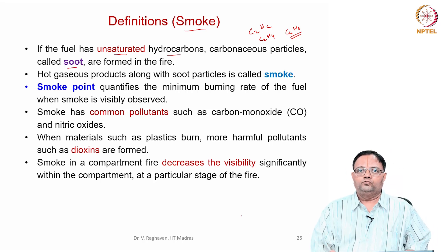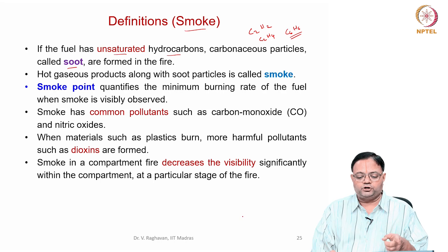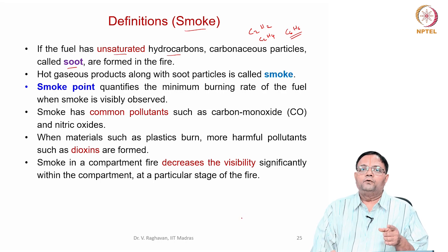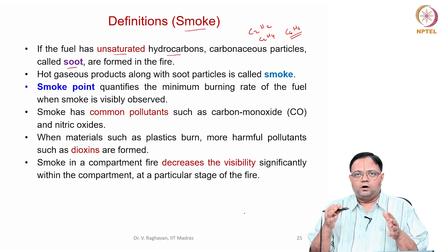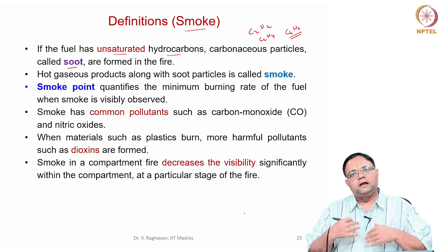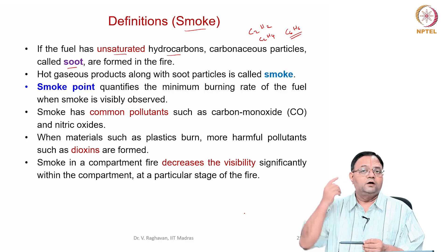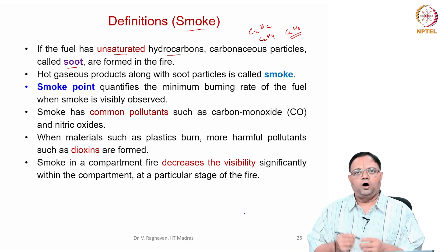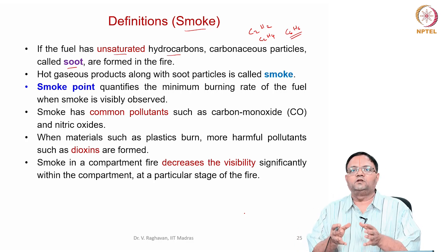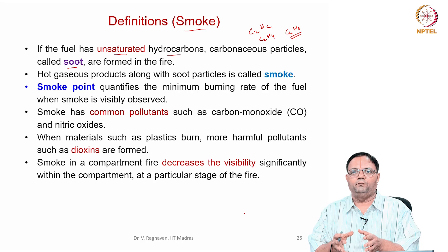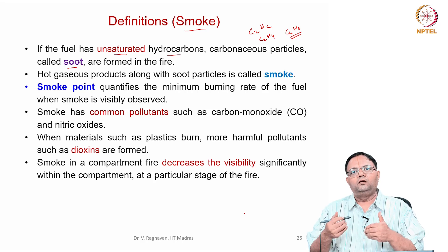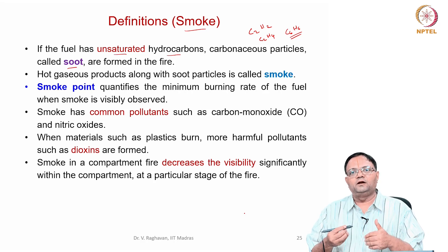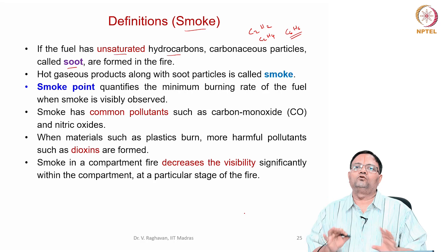If you take any fire involving a sofa, fabric, or wood, they predominantly have unsaturated hydrocarbons such as C2H2, C2H4, or cyclic hydrocarbons like C6H6. These will produce what is called soot. This soot production will be present in any combustion phenomena, but if you have a good supply of oxygen or air, then the soot which is formed within the flame or fire will basically be oxidized.